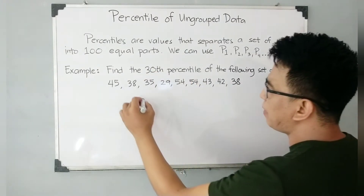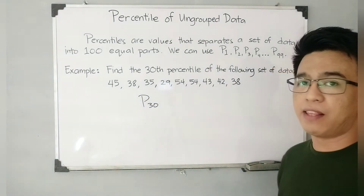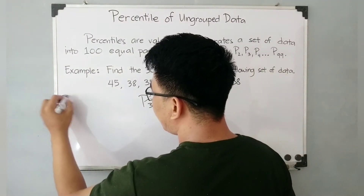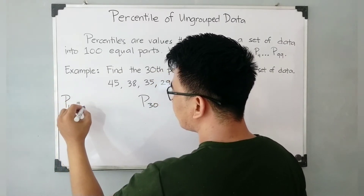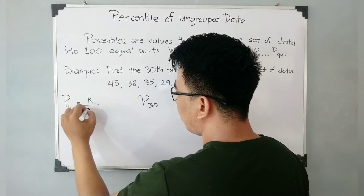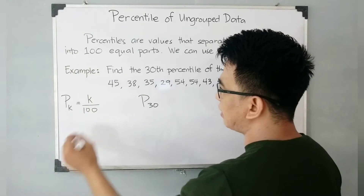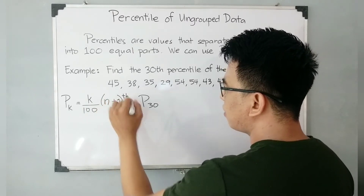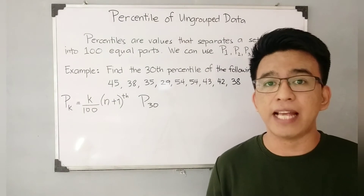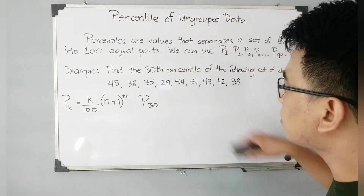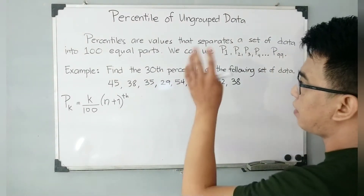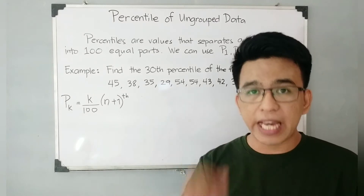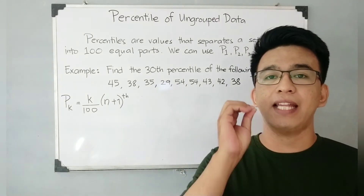Pag sinabi yung 30th percentile, ang pinapanap sa atin ay si P sub 30 or percentile 30. What is the formula in solving the percentile? The formula is: P sub K is equal to K over 100 times N plus 1, th. Bakit may Th dyan? Kasi, ang hinahanap muna natin ay position, not the exact value. Position muna ang hanapin natin. So, what is the first step in solving the 30th percentile or P sub 30? First thing you need to do is arrange the given data in ascending order.